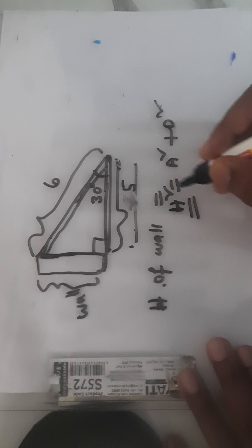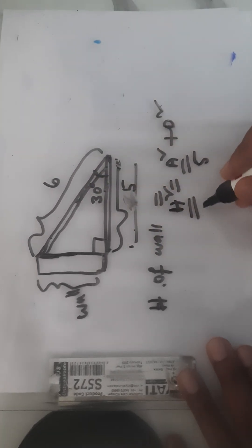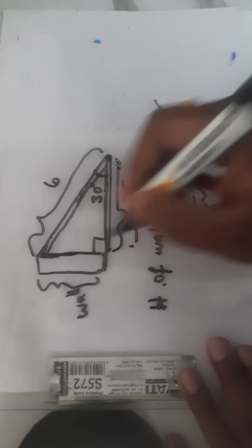What do we know here? We know the hypotenuse is 6. We know the adjacent side is 5. We don't know the opposite side. The opposite side is what we need to calculate.